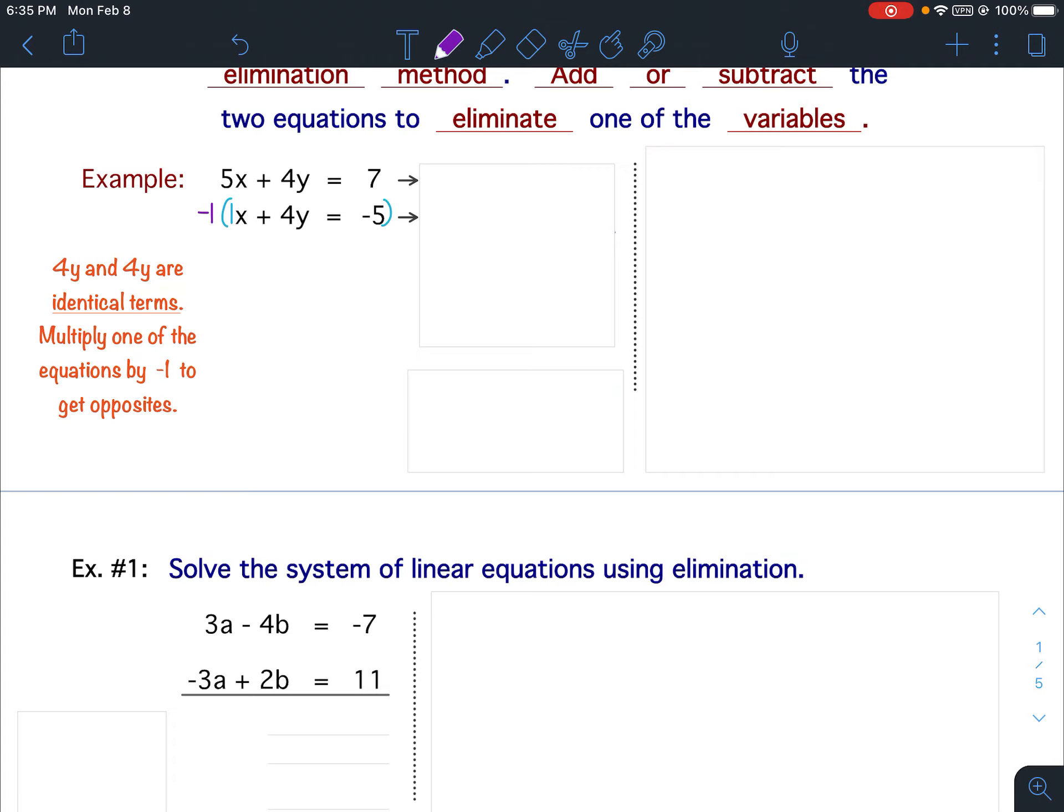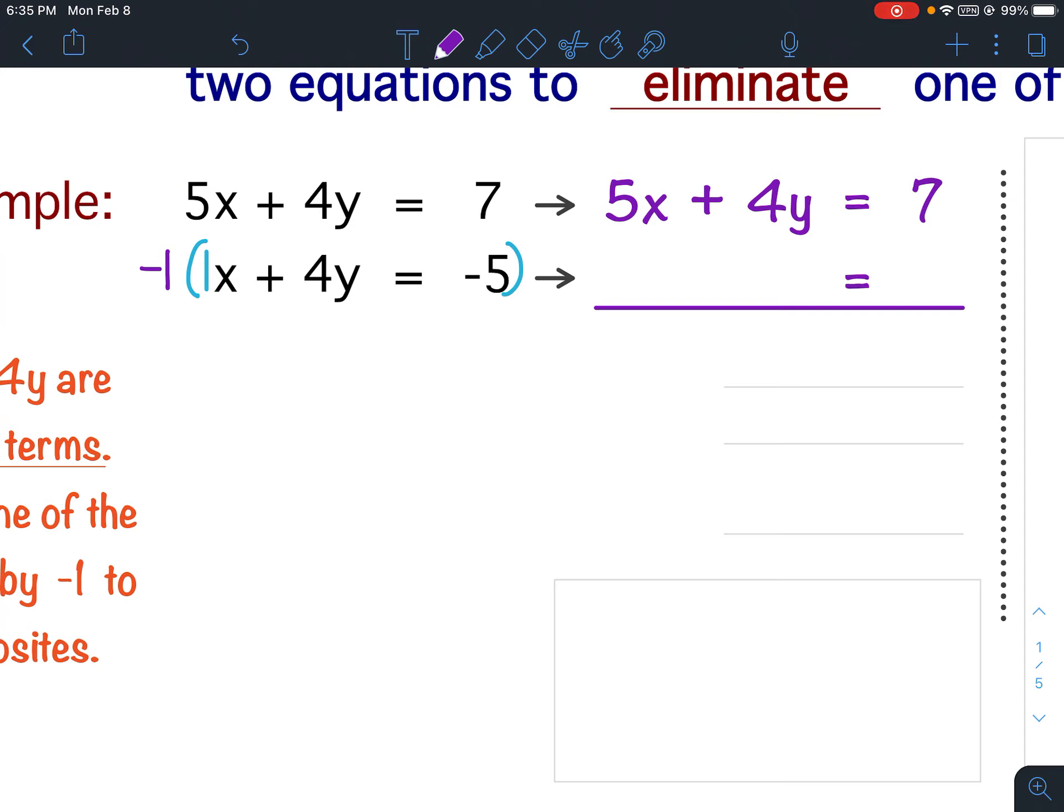The top equation will stay the same. So the top equation will be 5x plus 4y equals 7. But the bottom equation, when I multiply by negative 1, I'm going to distribute it. I'm going to take negative 1 times positive 1x. Remember, multiplying or dividing by negative 1 does nothing but change the sign. So this positive 1x will become negative 1x, and notice I keep the x terms lined up. Now I take negative 1 times the 4y. The positive 4y will become negative 4y. Then I take negative 1 times the constant term negative 5. The opposite of negative 5 is positive 5. Notice how I keep my x terms lined up, the y terms lined up, and the constant terms lined up. I also keep the equal signs lined up.